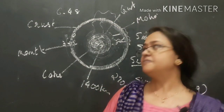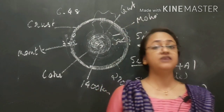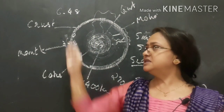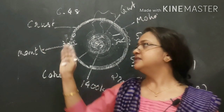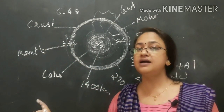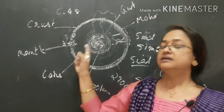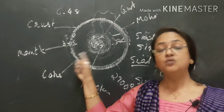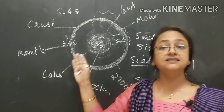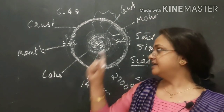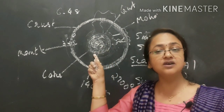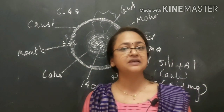Let us revise. We have studied many new terms: the characteristic features of the crust, mantle, and core. Key points to remember include the thickness of the crust, the meaning of sial and sima, the thickness and temperature of the mantle, the meaning of the asthenosphere and why it is in liquid form, and the temperature, pressure, and density of the core and inner core. Study all of these carefully.